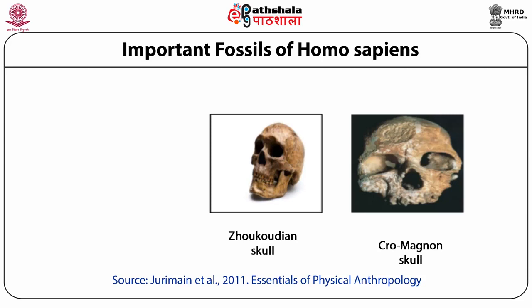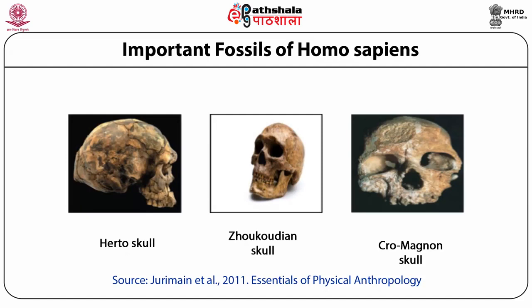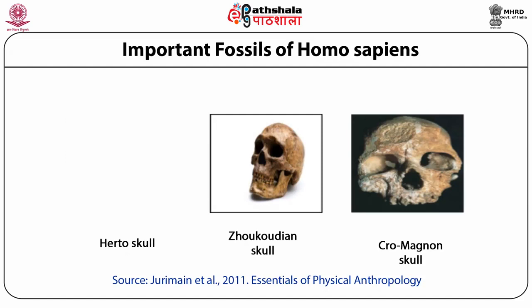Regarding Australian fossils, the earliest remains discovered came from Lake Mungo in southeastern Australia, suggesting the population had modern anatomical features. Another important site is Cow Swamp, where the fossil bears several archaic features, though its post-cranial skeleton resembles Australian Aboriginals. It is believed that humans migrated to Australia about 50,000 years ago and populated this continent.